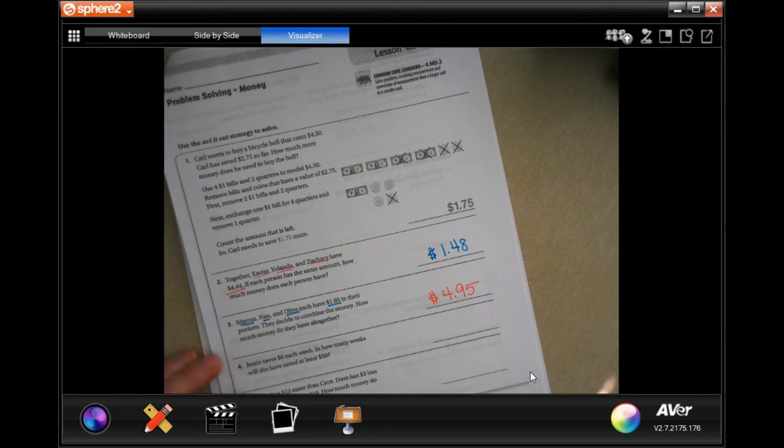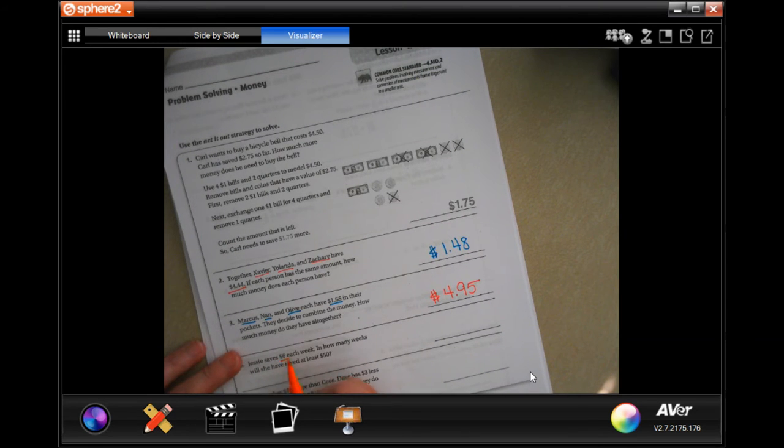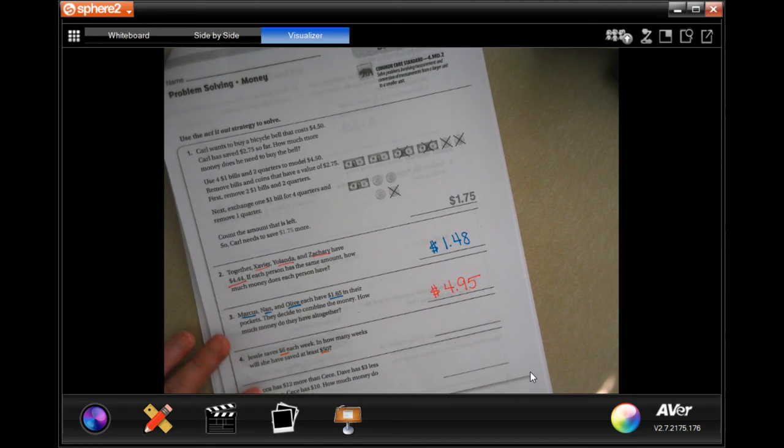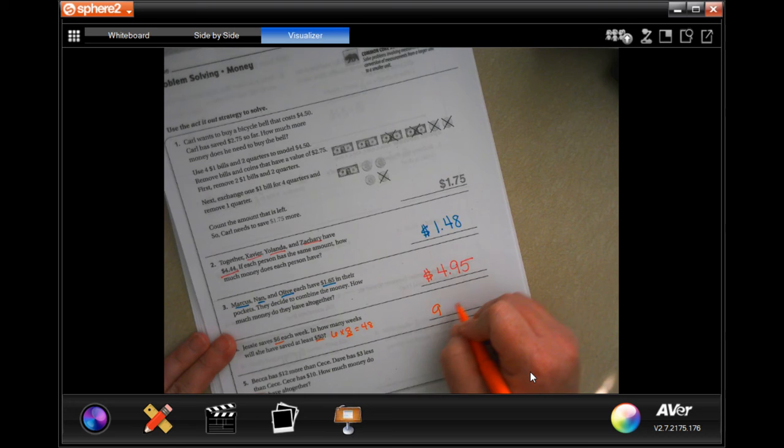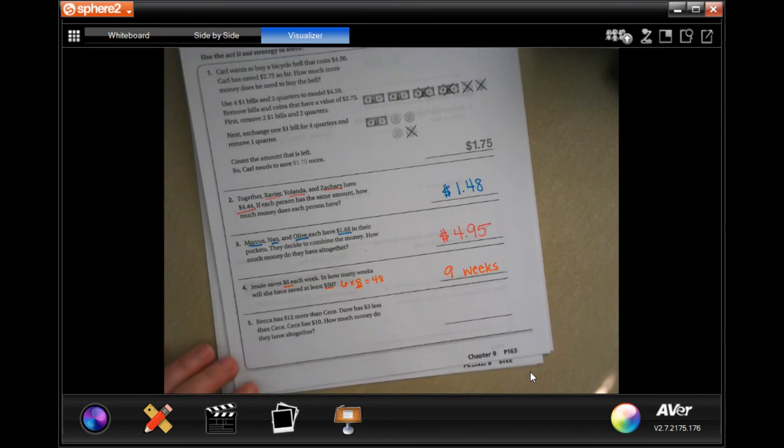Now Jesu saves six dollars each week. How many weeks will she have saved at least fifty dollars? Well, six times eight is 48, so that's eight weeks. Fifty dollars, we have to add another week on, so that's nine weeks. That wasn't so bad.